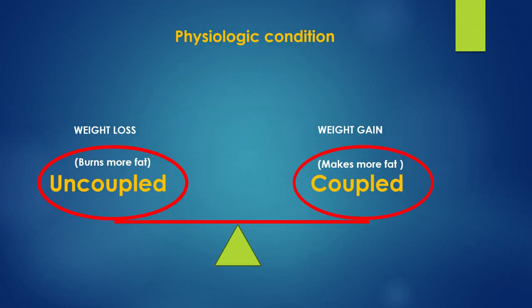In physiologic conditions, we maintain homeostasis and a certain weight threshold — we neither lose nor gain weight. When coupled, you make more fat; when uncoupled, you burn more fat, and they're always in balance. No matter how much you trip that scale, it will always try to correct itself and maintain homeostasis.